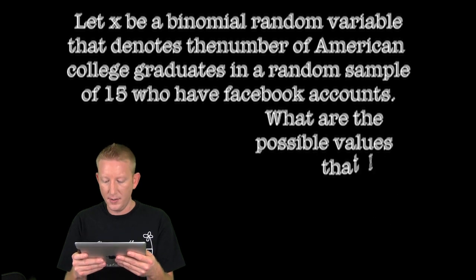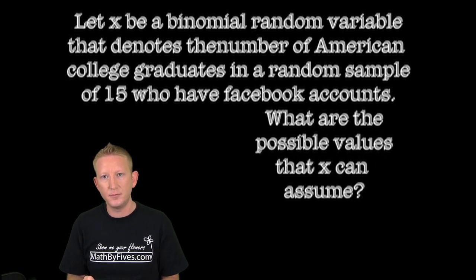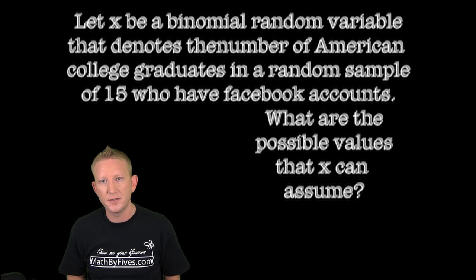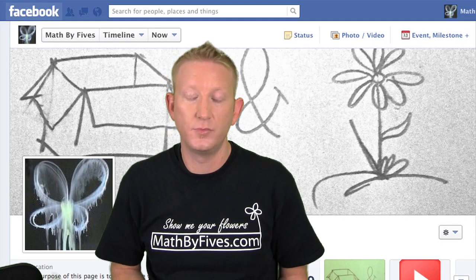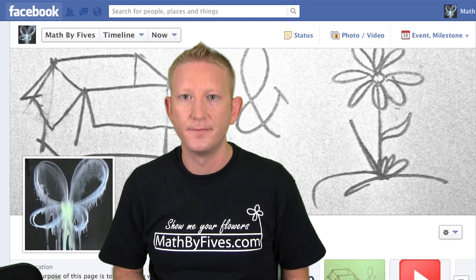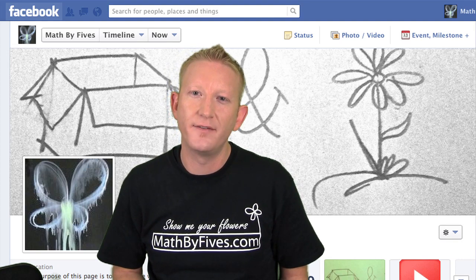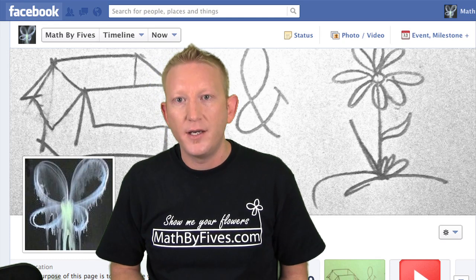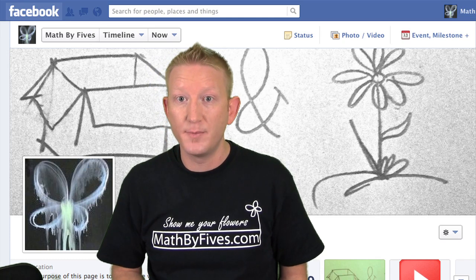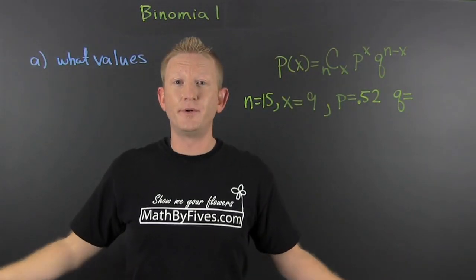What are the possible values that X can assume? Well, there's 15 trials. They either have an account or they don't. We're assuming that they're independent of each other. But one of the reasons you get on Facebook is because of your friends. But they told us it was binomial, so we'll go with it.